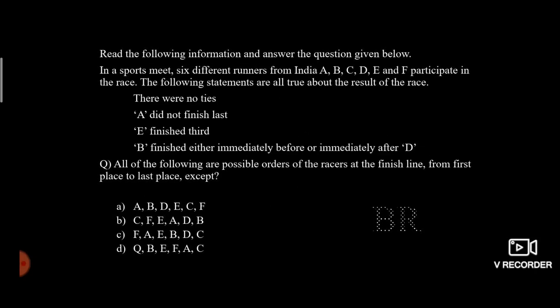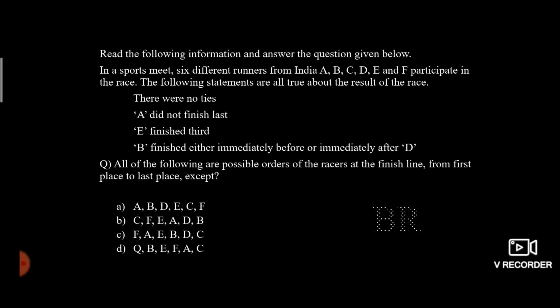Read the following information and answer the question given below. In a sports meet, six different runners from India — A, B, C, D, E and F — participate in the race. The following statements are all true about the result of the race. Once you understand that this data is about the result of the race, take a brief look at the question. All the following are the possible orders of the races at the finish line from the first place to the last place.